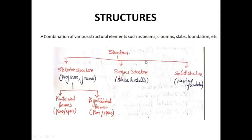A structure is basically a combination of various structural elements such as beams, columns, slabs, and foundations. A beam is a horizontal member mainly designed to carry tensile forces. Columns are vertical members designed to carry compressive forces. Slabs are coverings used as roofs. Foundations carry the load of the whole superstructure and act as a mediator between the superstructure and the soil.